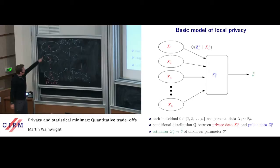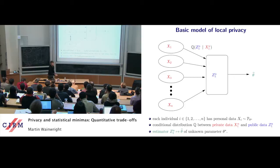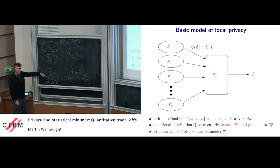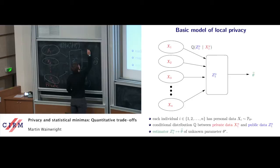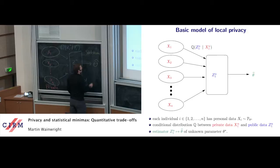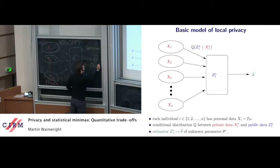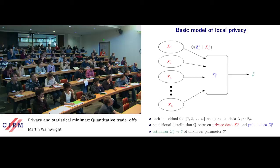We want to preserve information about this, but at the societal level we're interested in aggregation. We're going to model the x's as being drawn from a population with a parameter theta, and we'd like to estimate it. This is what the statistician does — we want to estimate some parameter of the data — but the key here is that our estimator is only going to be a function of the privatized data.